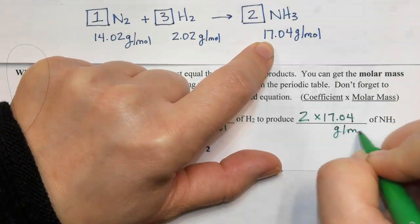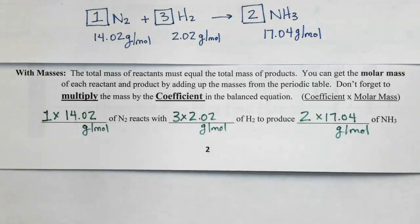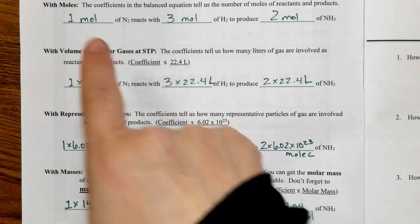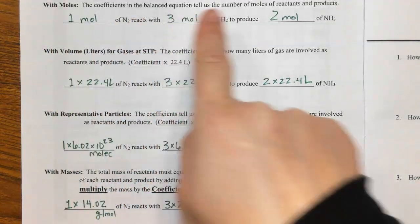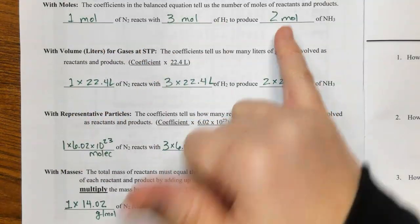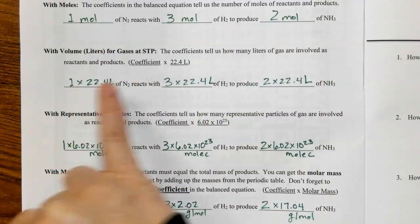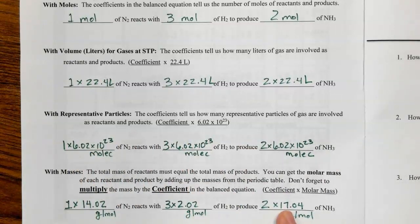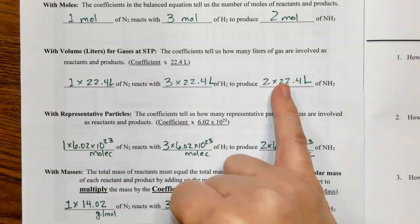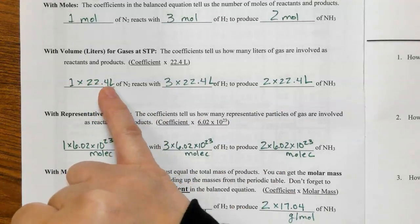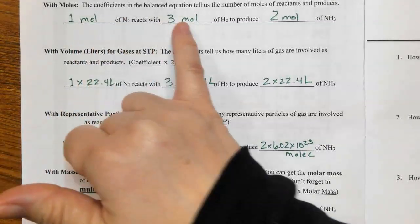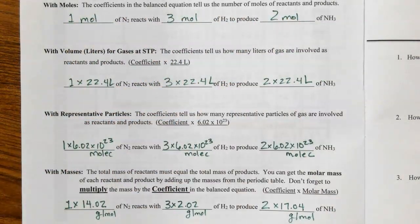For ammonia, we take coefficient 2 times its molar mass of 17.04 grams per mole. Notice that the coefficients 1, 3, and 2 only represent the number of moles — they do not represent the number of liters, molecules, or grams, because the coefficients get multiplied by the molar volume, Avogadro's number, or the molar mass. So the coefficients only represent the mole ratio in a reaction.